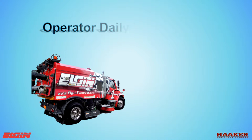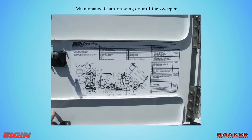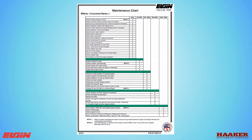Operator Daily Maintenance. The maintenance chart is on one of the wing doors of the sweeper — Non-Tier 4 is on the right side and Tier 4 is on the left door. The chart groups items to be checked daily, at 50 hours or once a week, 150 hours or once a month, 500 hours or every six months, and 1,000 hours or annually.